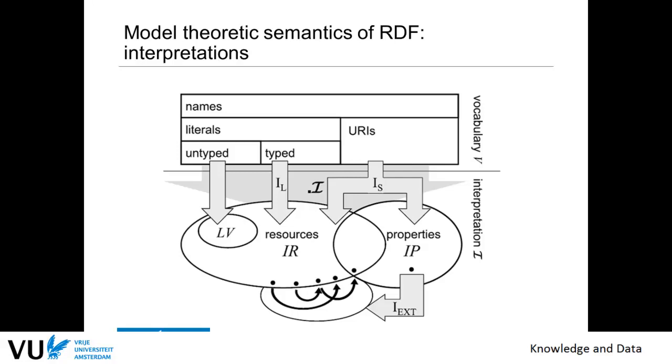But what is very important to see is that in our language that we defined last week, the simple knowledge graph logic, we couldn't say anything about the properties. We couldn't say this property is transitive or it's semantic or it has a domain or it has a range, whereas in RDF we can do this.